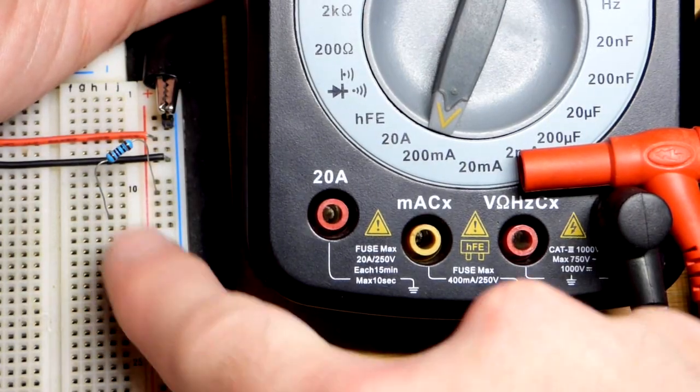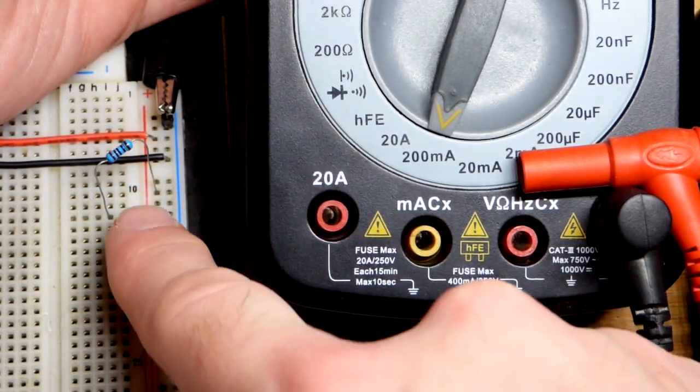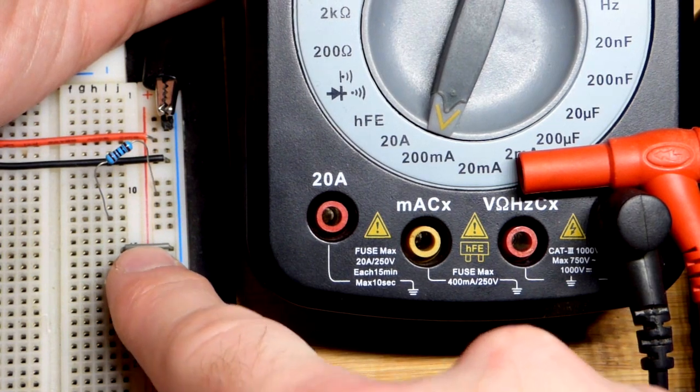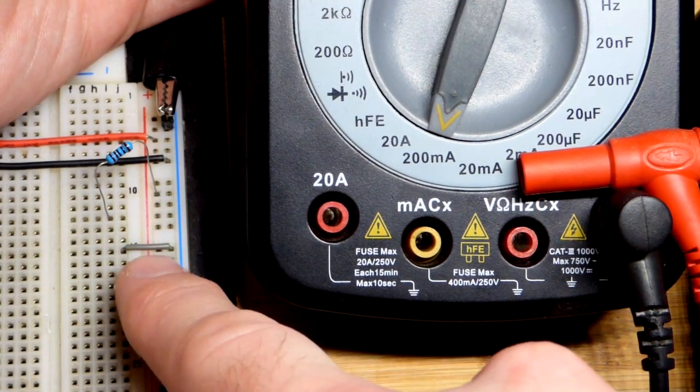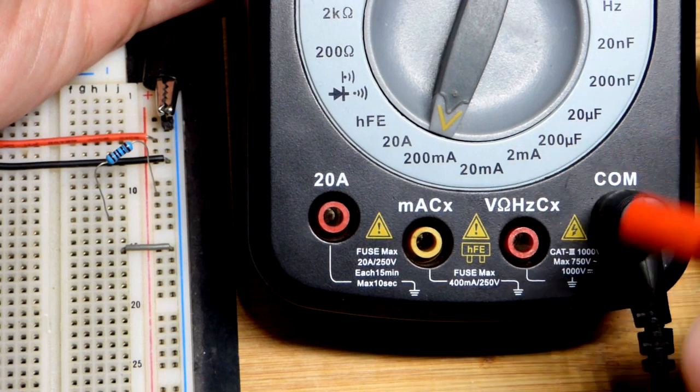In this video, we're going to look at measuring the current of a circuit using a multimeter. First off, you have to open the circuit. We have a gap here between the resistor and that jumper. It's just a one-component circuit.